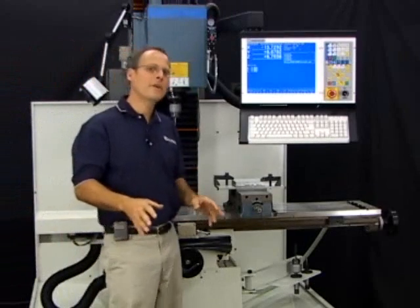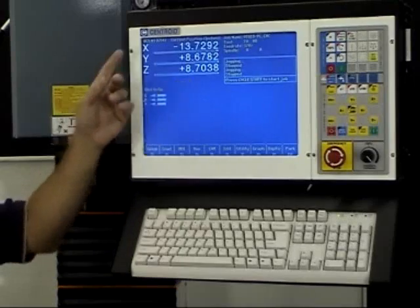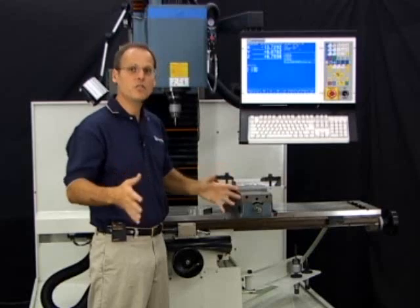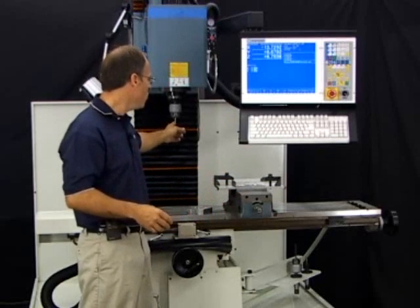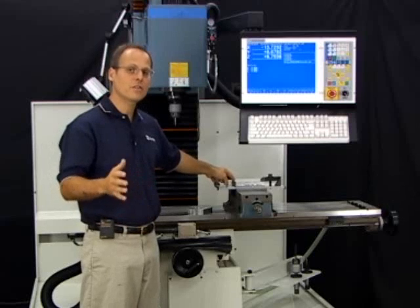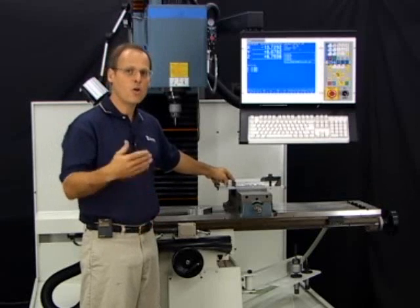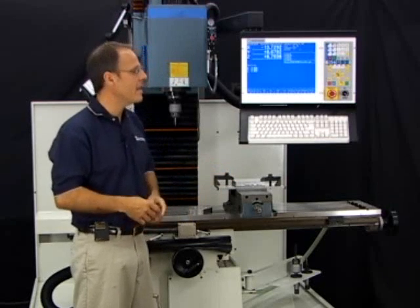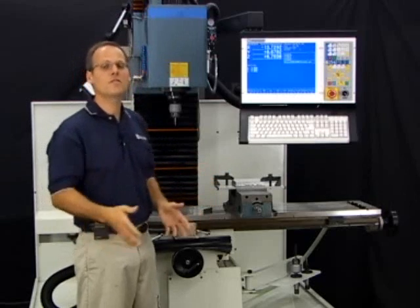We're all done homing out. I know that because we have our DRO now being displayed. The digital readout is the current position of the tool relative to the last part zero position that we were using. The control remembers that from day to day. Now we're ready to use the machine.